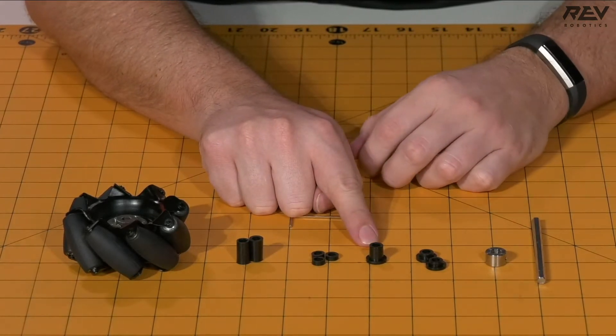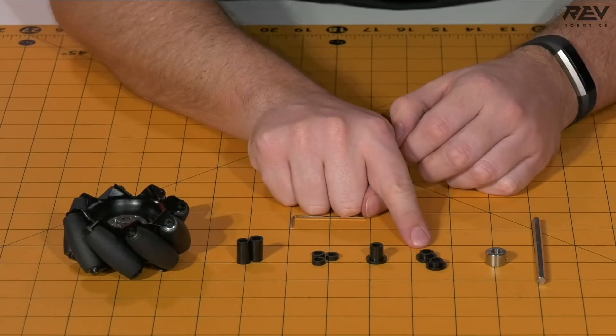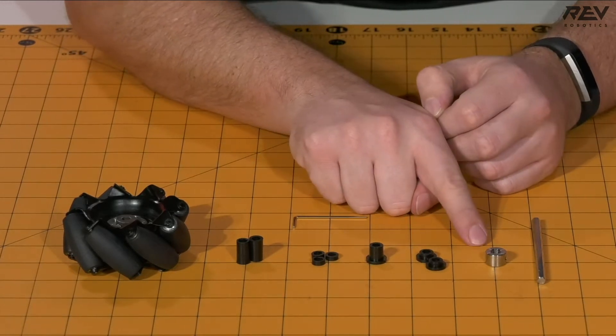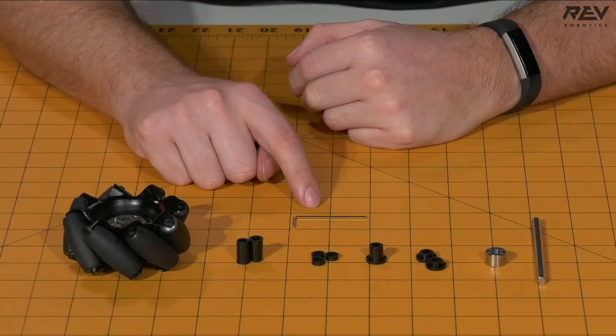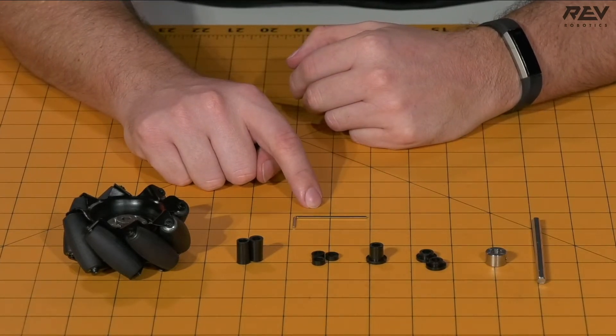You'll also need one long through-bore bearing, two short through-bore bearings, a shaft collar, a 90mm length of 5mm hex shaft, and a 1.5mm Allen wrench.